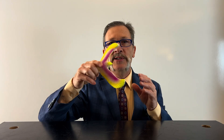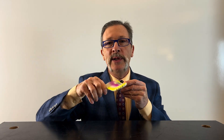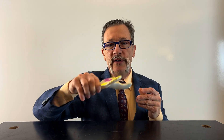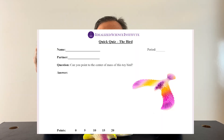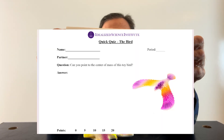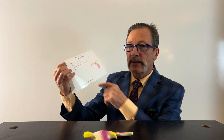For today's quiz, we've got this plastic toy bird. We simply want to know where the center of mass, center of gravity is on this object. Here's what your quiz looks like today. I'll hold that up. As always, mark your answer as completely as possible and list your level of confidence.